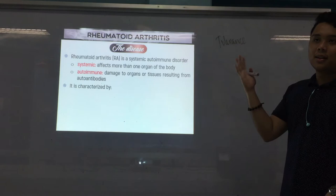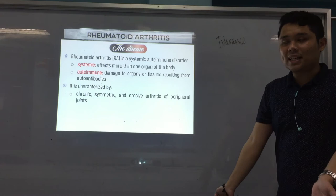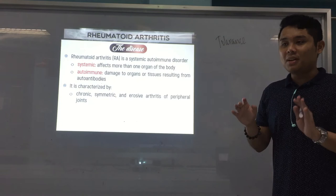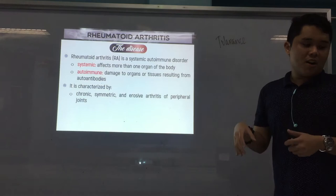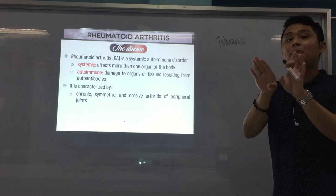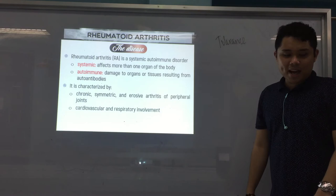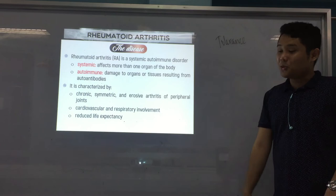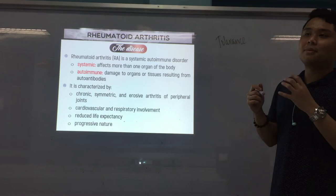Now we go to the symptoms and characteristics of the disease. Number one: chronic, symmetric, and erosive arthritis of peripheral joints. Peripheral meaning in your extremities. Chronic meaning long-term. Symmetric means if one side has the arthritis, the other side should also have it. And erosive means your bones are being degraded and eroded. There can also be cardiovascular and respiratory involvement, and because of that, there is a reduced life expectancy. The nature is progressive — so the disease worsens over time, which makes early diagnosis very important.